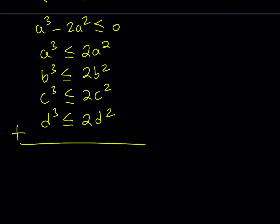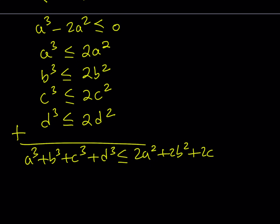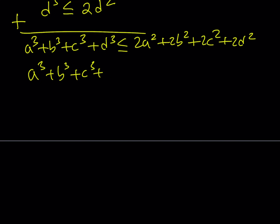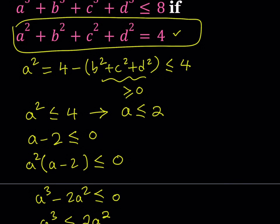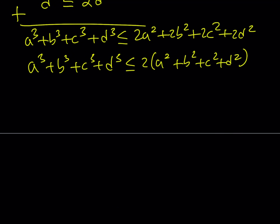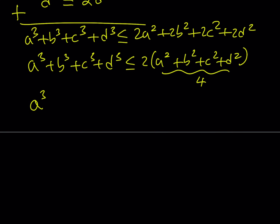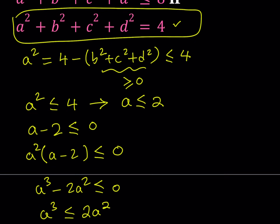We can add inequalities since they're all in the same direction. So we get a cubed plus b cubed plus c cubed plus d cubed is less than or equal to 2a squared plus 2b squared plus 2c squared plus 2d squared. This right-hand side can be factored — take out the 2 to get 2 times (a squared plus b squared plus c squared plus d squared). We're given that a squared plus b squared plus c squared plus d squared equals 4, so we replace it with 4. Therefore the sum of the cubes is less than or equal to 2 times 4, which is 8. And that's what we were trying to prove.